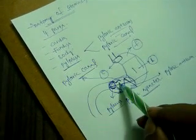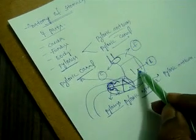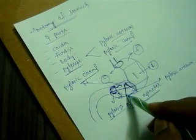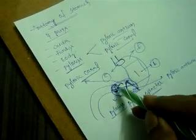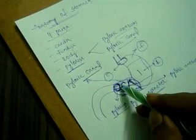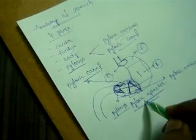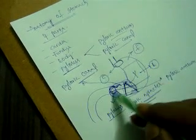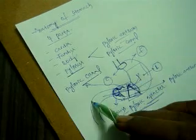The pyloric canal connects the body of the stomach with the pylorus. This triangular region is called as the pyloric antrum, and the bulged part is called as the pyloric sphincter. This pyloric sphincter is used to control the outflow of food and at the same time the backflow of food into and outside of the stomach.